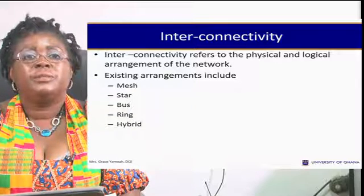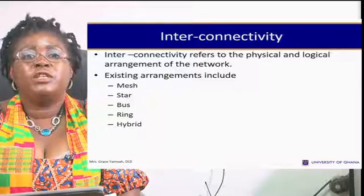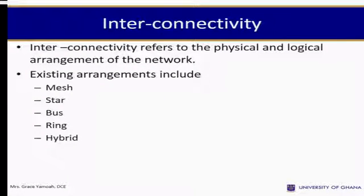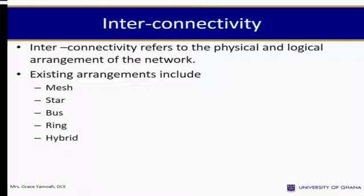Interconnectivity refers to the physical and logical arrangement of the network. Existing arrangements include a mesh, a star, a bus, a ring, and a hybrid. These are approaches and ways we put network physical structures together.